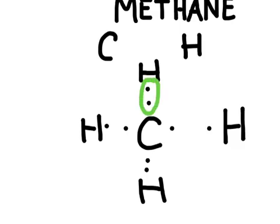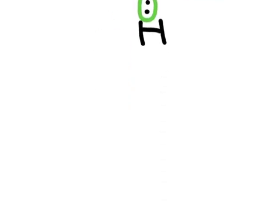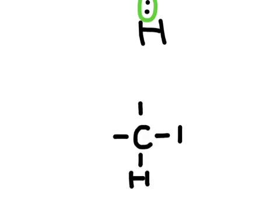Looking at all the bonded pairs forming, that gives carbon eight electrons and gives each hydrogen two electrons. Let's redraw the structural formula: carbon with four bonds going out to the four hydrogens. That is the structural formula, or Lewis structure, for methane (CH₄).